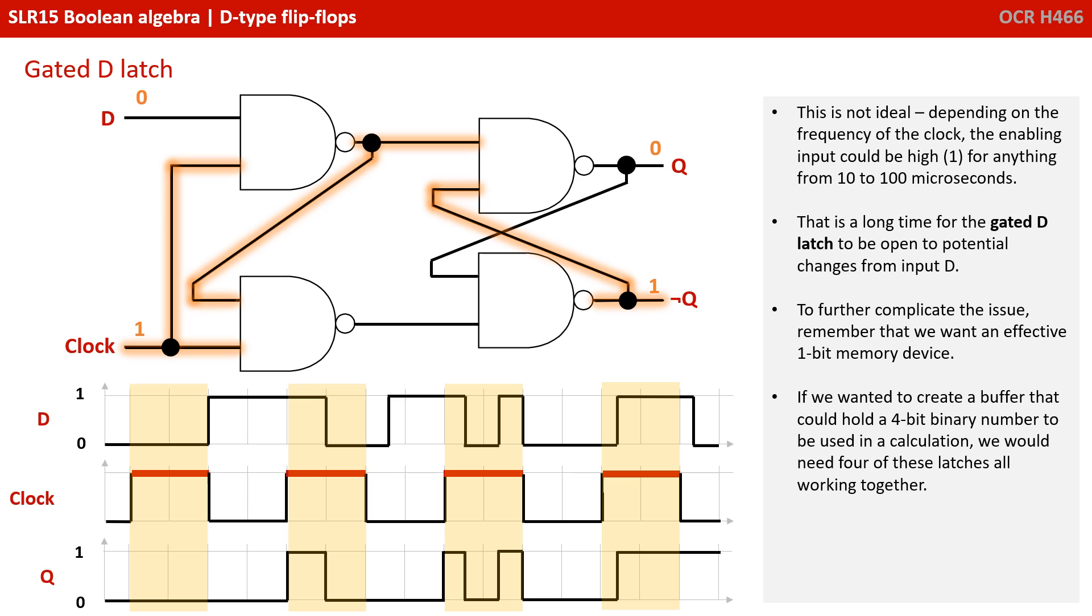To further complicate the issue, remember that we want an effective 1-bit memory device. If we wanted to create a buffer that could hold a 4-bit binary number to be used in calculations, we would need 4 of these latches all working together.